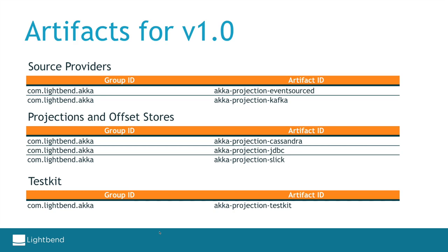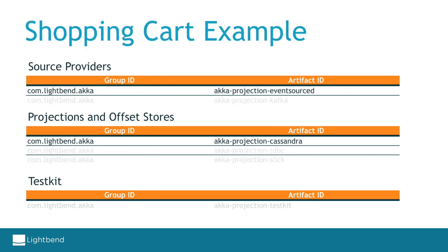Version 1.0 has six artifacts to choose from. We have two kinds of source providers: the event-sourced provider, which reads from any Akka Persistence query plugin, and the Kafka provider, which delivers events from a Kafka topic. Then the three projection implementations already mentioned — Cassandra, JDBC, and Slick — with their corresponding offset stores. Finally, the Projection TestKit gives you tooling for testing. In the following example we will be using the event-sourced provider and the Cassandra projection implementation.